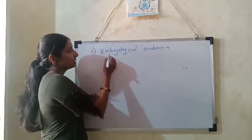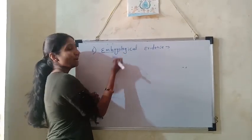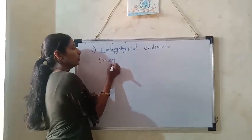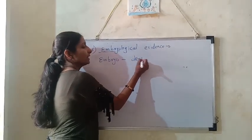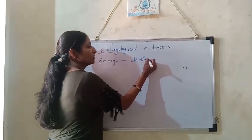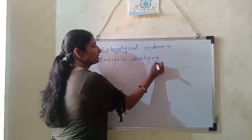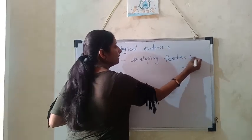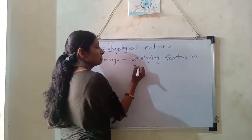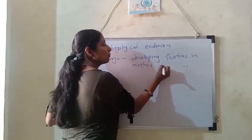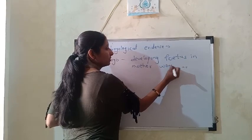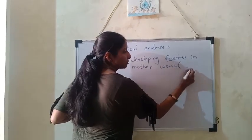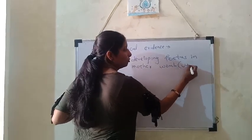What do we mean by embryo? An embryo is a developing fetus — that is, a baby in the mother's womb. Scientifically, the womb is called the uterus.